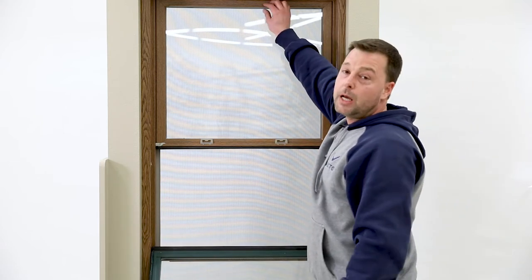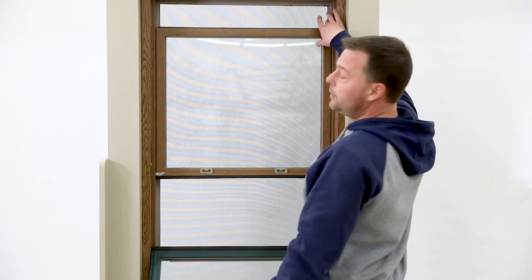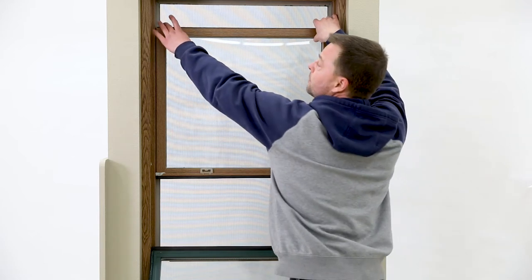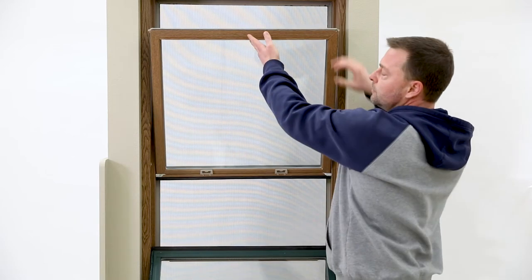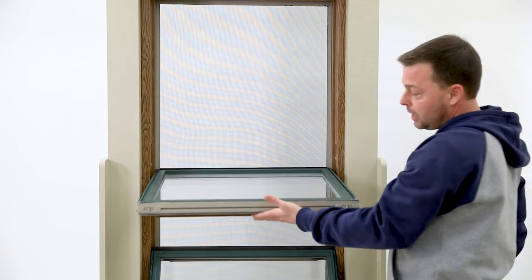Now take your top sash, move that down approximately 4 inches. Find your tilt latches at the top, move both knobs in towards the center, which will allow that sash to pivot.